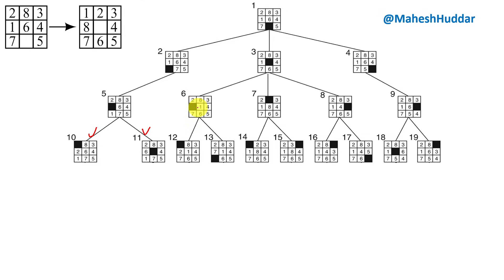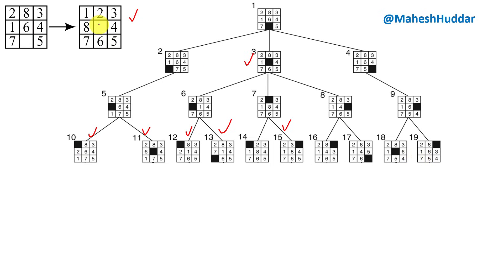We expand state six next. Three possibilities exist, but moving right returns the parent, leaving two valid moves: up and bottom, producing two new states. For state seven, three possibilities exist but moving bottom returns the parent, so we can move left or right, producing two states. We continue this process for all states, comparing each new state against the goal. None match, so BFS continues.